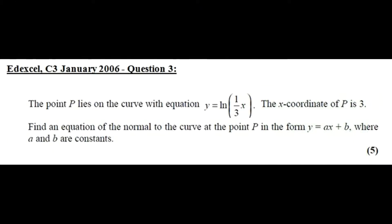In this video I'm going to do a past exam question on differentiation. The point P lies on the curve with equation y equals ln. The x-coordinate of P is 3. Find an equation of the normal to the curve at the point P in the form y equals ax plus b, where a and b are constants.